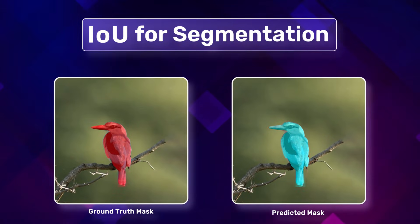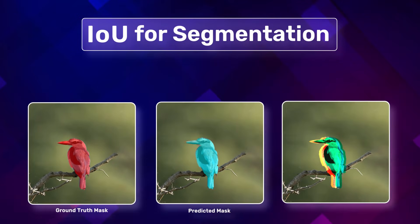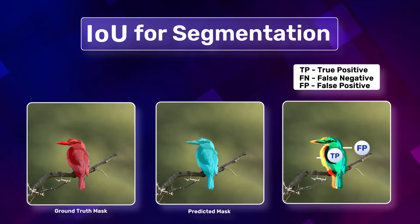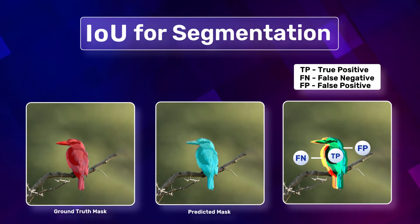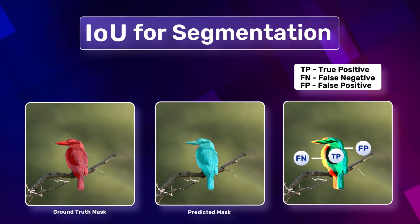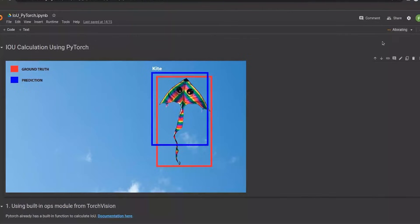Pixel-by-pixel analysis is done. Moreover, the definition of true positive, false positive, and false negative is slightly different as it is not based on a predefined threshold.